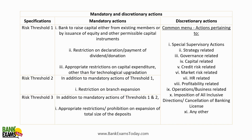The mandatory actions are according to the risk thresholds. If a bank is under Risk Threshold 1, it may need to raise capital either from existing members or by issuing equity and other permissible capital instruments. There is also a restriction on declaration of dividend and donations, and an appropriate restriction on capital expenditure other than for technological upgradation.